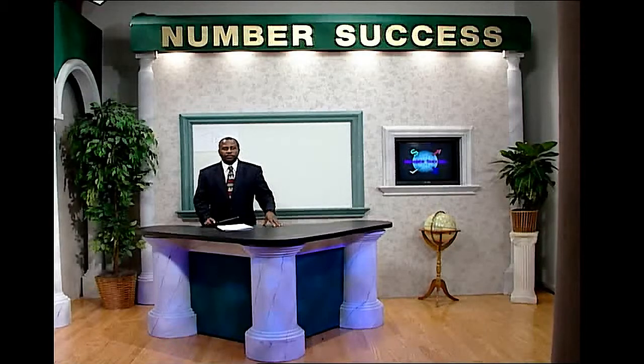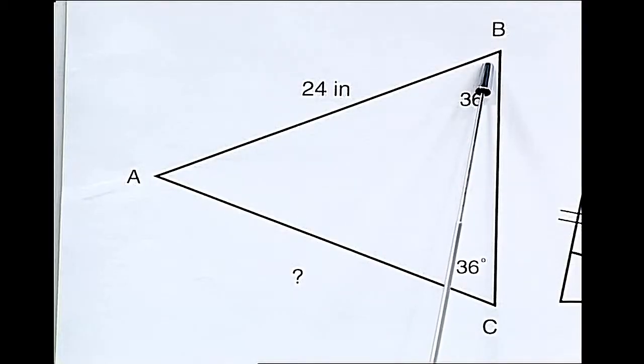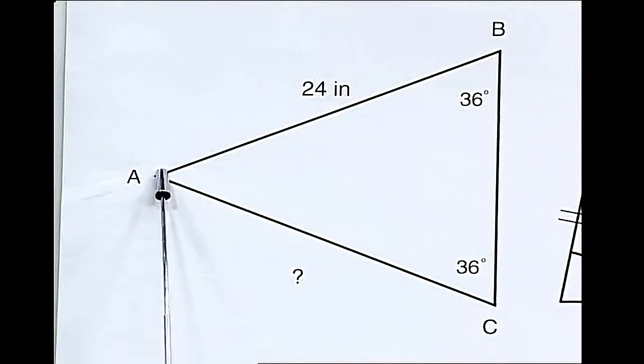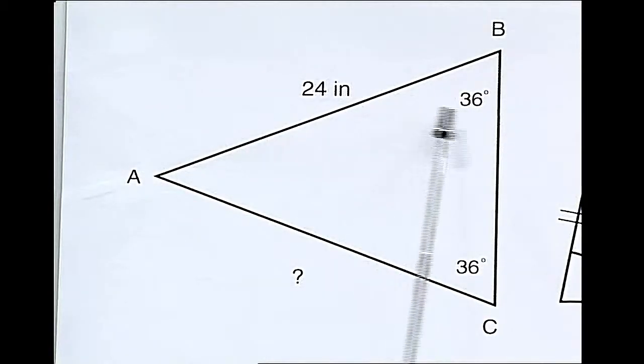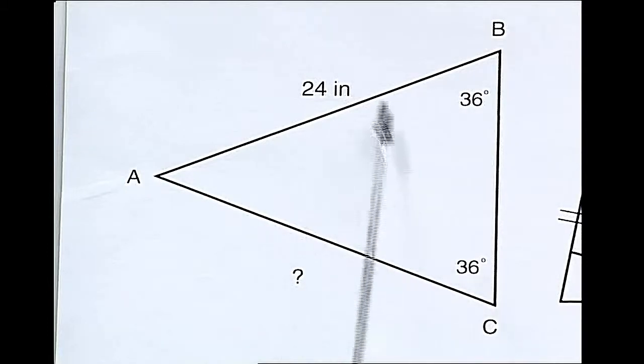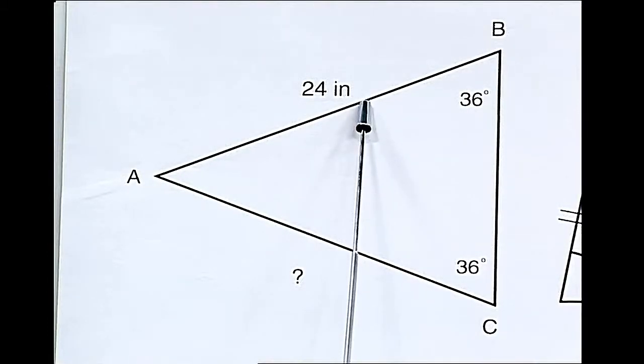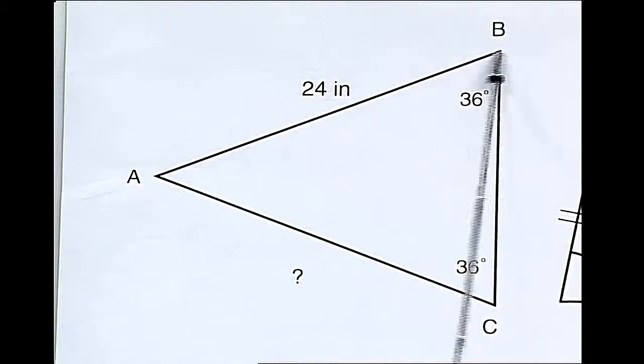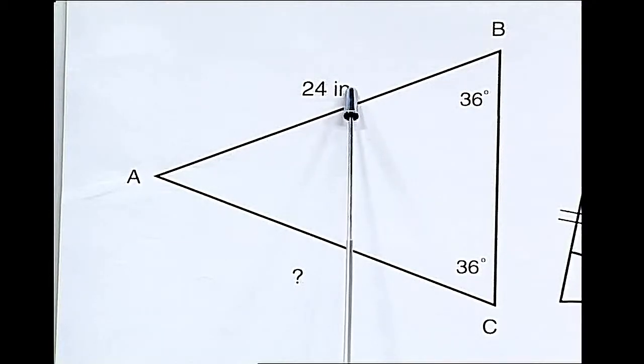Types of Triangles. Example: find side AC. If angle ABC equals 36 degrees and angle BCA equals 36 degrees, then the sides opposite those angles are also equal. If line segment AB is equal to 24 inches, then line segment AC is also 24 inches.